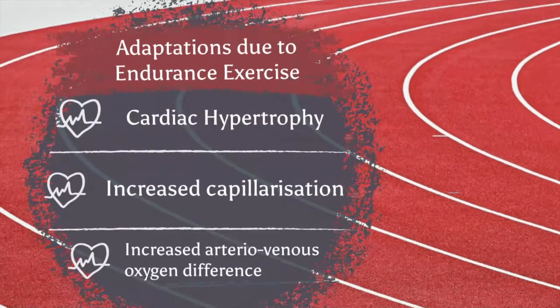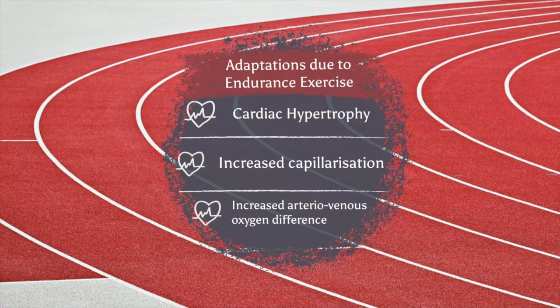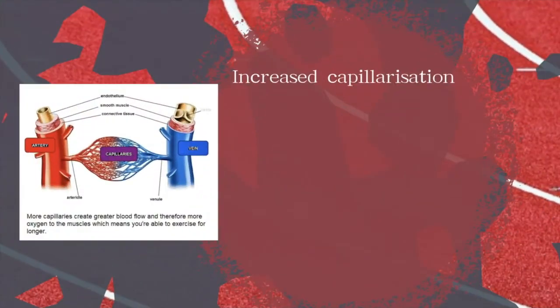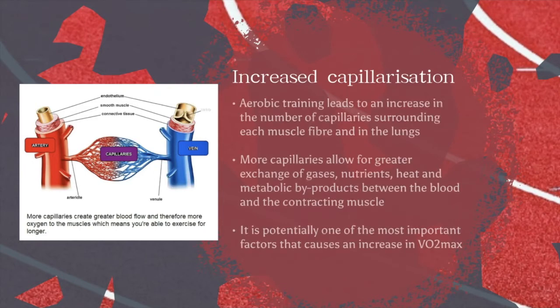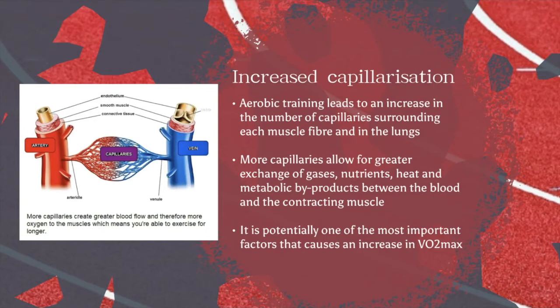The next adaptation is increased capillarization. In the muscles, we have a number of capillaries surrounding each muscle fiber, and we also have capillaries in the lungs around the alveoli. When we take part in endurance training, the number of capillaries in the muscle fibers and in the lungs increases. This allows for a greater exchange of gases, greater exchange of nutrients, and also allows metabolic heat produced during exercise to be dissipated more easily, preventing overheating.